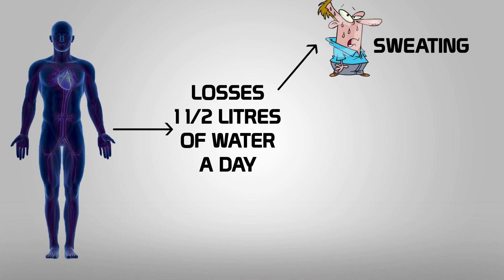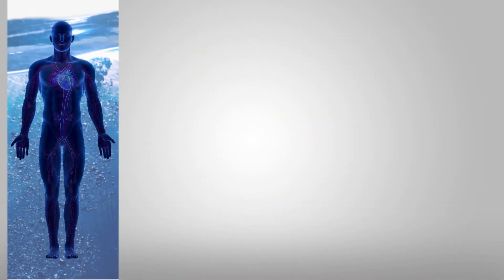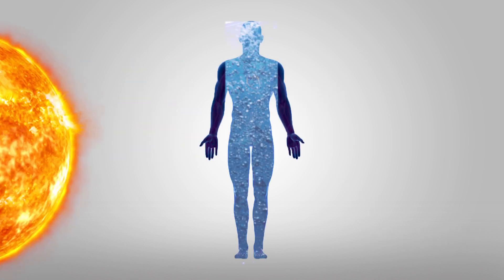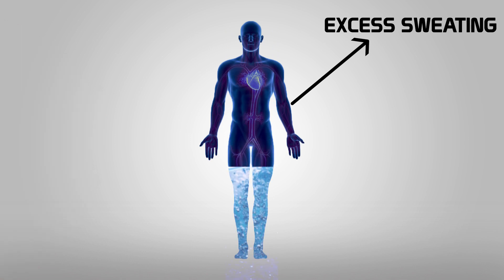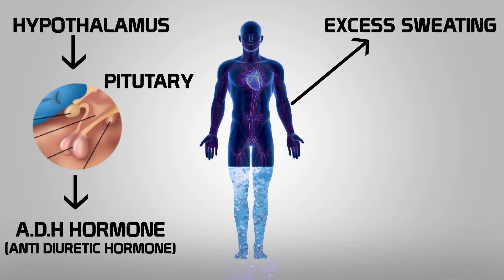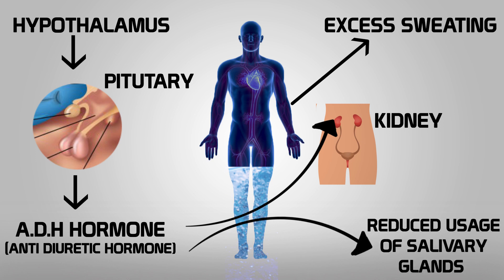How do we get rid of the fat? If we are able to maintain the temperature of our body, we will release the temperature of our body. The hypothalamus releases ADH hormone. We will be able to maintain the temperature of our body and maintain our body's balance.